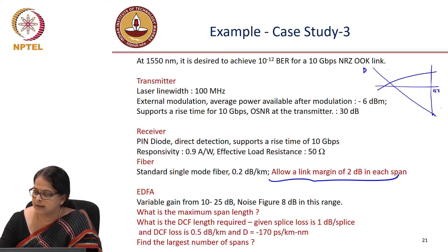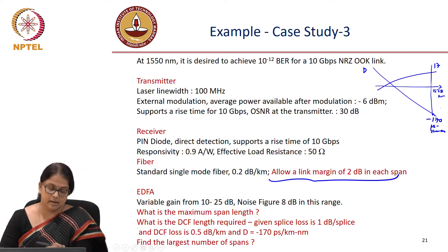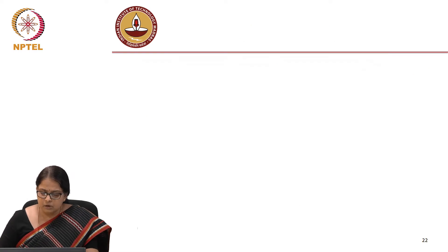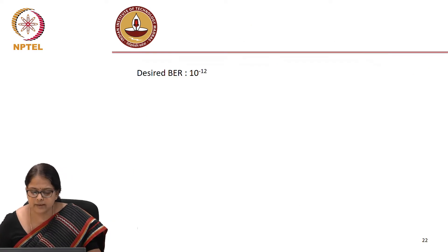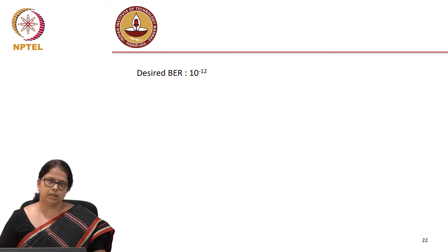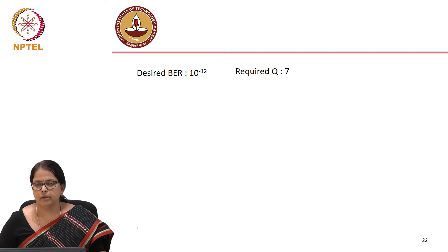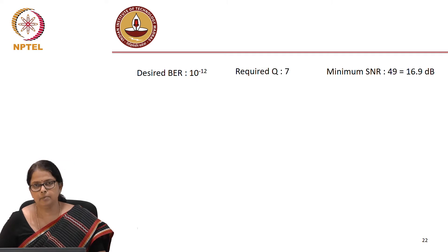For a dispersion compensating fibre, the dispersion is made to be a large negative value. This is D versus lambda — it was +17 for SMF and here it is minus 170 ps/km/nm, so the dispersion is really, really large. How do we go about doing the link design? We start again with the loss budget, noting that BER of 10^-12 requires Q of 7, so SNR is 16.9 dB.